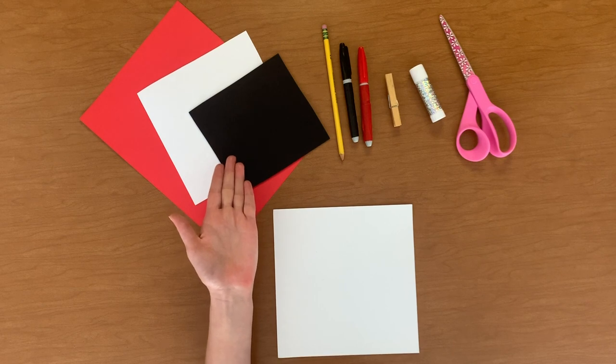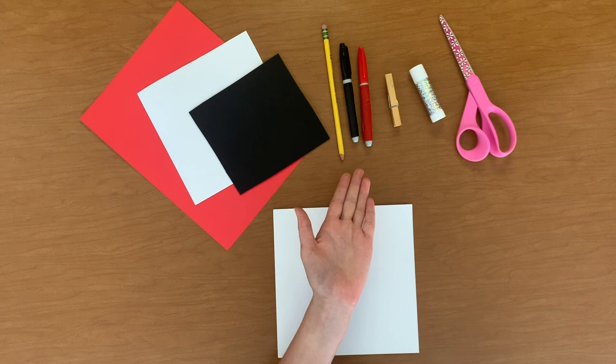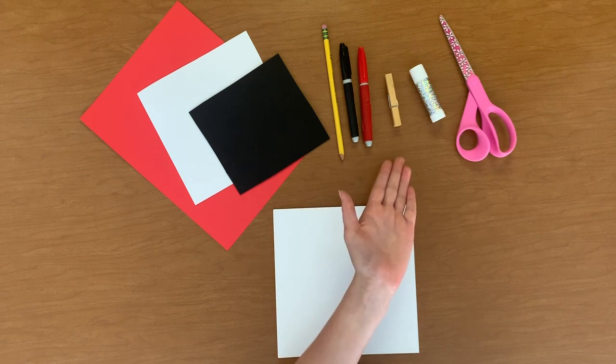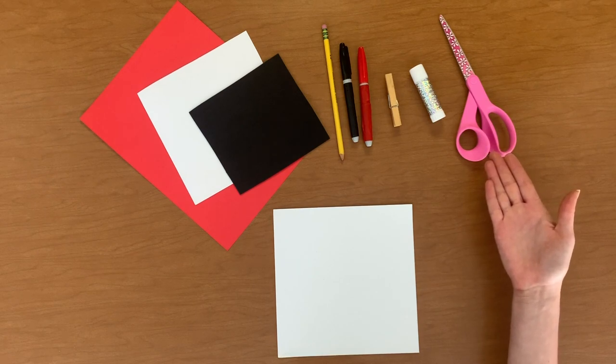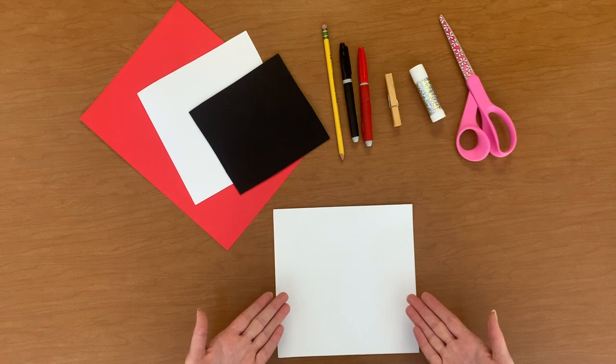You will need red, white, and black construction paper, foam, or felt, a pencil and red and black washable magic markers, a clothespin, a glue stick, a pair of scissors, which you will need to ask a grown-up to assist you with, and a scrap piece of paper to keep your work surface clean.